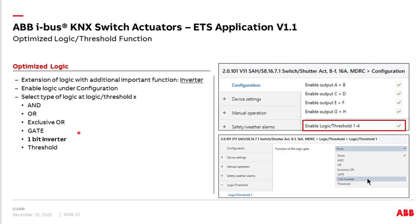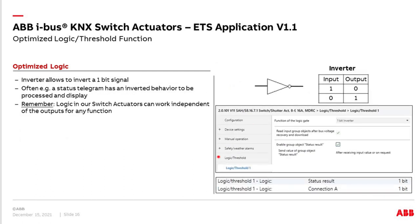What did we do in logic? We added a one-bit inverter. How to enable this is very simple — you have here six parameters, each enabling logic blocks, and then you decide what shall be selected as the kind of function. And you see now a one-bit inverter is available. It's not a very complicated function — in principle, inverting a one-bit signal from one to zero and vice versa. I have experienced that this is sometimes needed more than expected, because any status telegram sometimes has to be inverted in behavior to be processed. So a quick inverter is now directly in the Switch Actuator, and it's really independent of the outputs.